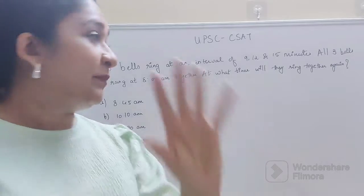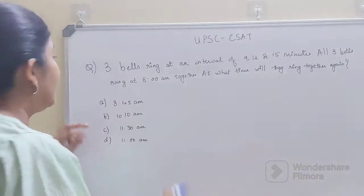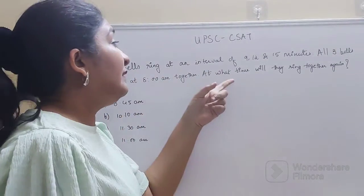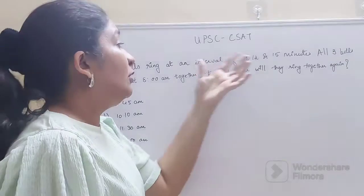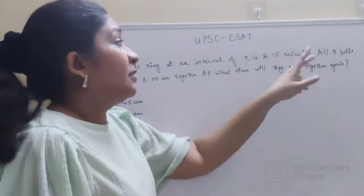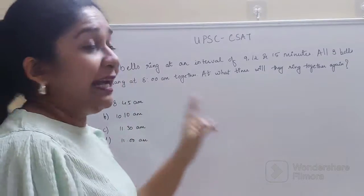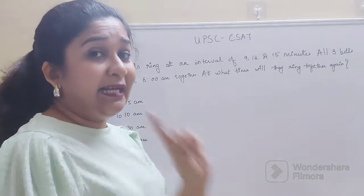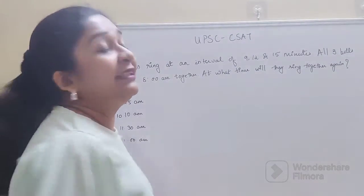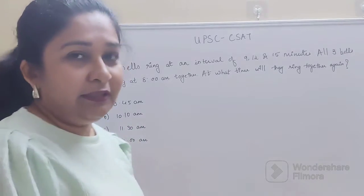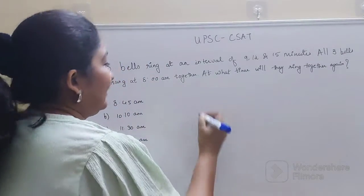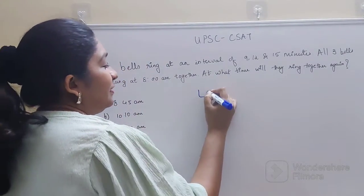Let's look at the question first. Three bells ring at intervals of 9, 12, and 15 minutes. All three bells rang at 8 a.m. together. At what time will they ring together again?